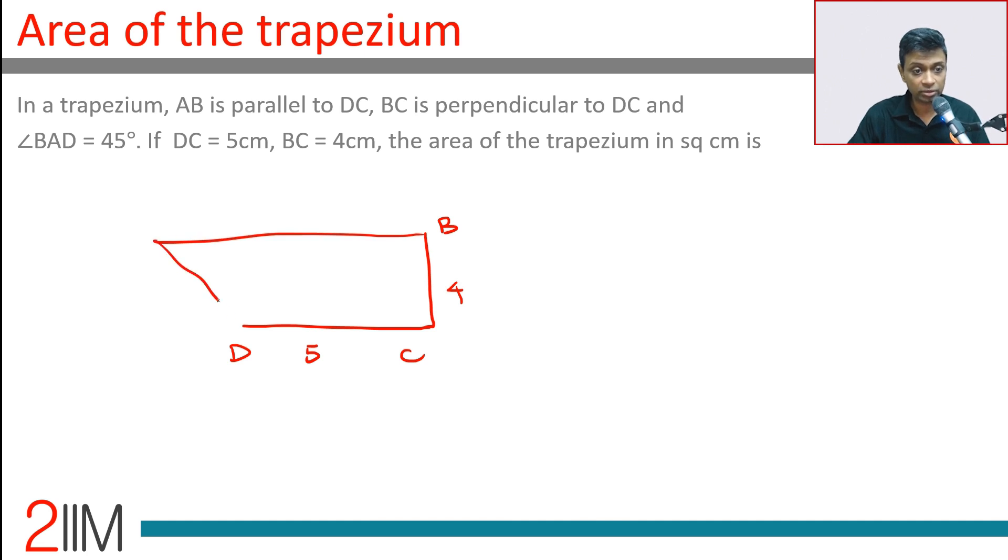So the diagram like this. We want to find area of the trapezium. I'm going to mark an E here, which makes this a rectangle. This is 4, this is 5, this is 4 into 5, 20 we've got that.